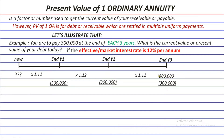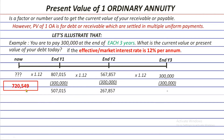If that balance is 300,000, then dividing by 1.12 gives us 267,857. And if that was the result after deducting the 300,000, then the balance before that deduction must be 567,857. Dividing by 1.12 again gives 507,015, so the balance before that payment was 807,015. Dividing once more by 1.12 gives the present value of your debt: 720,549.